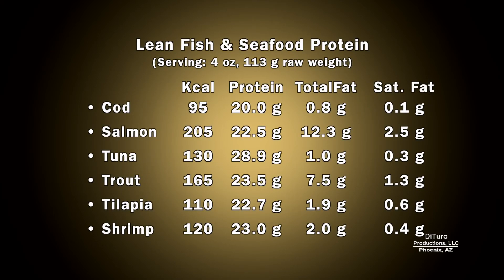Most fish and seafood are high protein and low fat. Although salmon is high in fat, it has less saturated fat than beef.